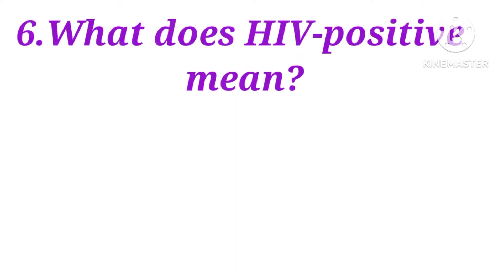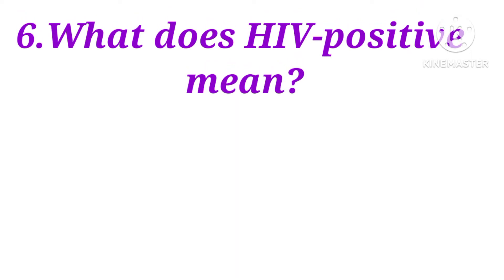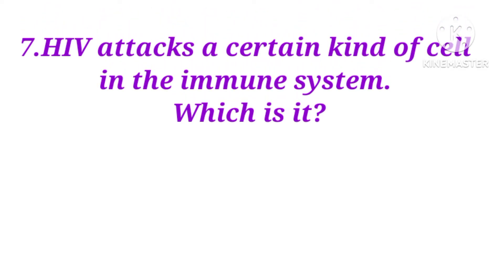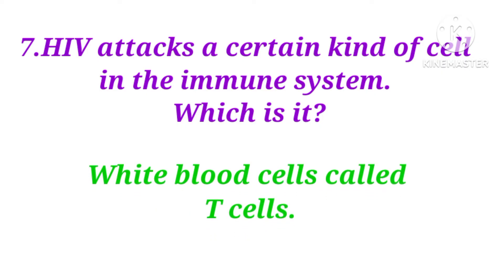What does HIV positive mean? Either antibodies against HIV or the virus particles themselves are present in the blood. HIV attacks a certain kind of cell in the immune system — which is it? White blood cells called T-cells.